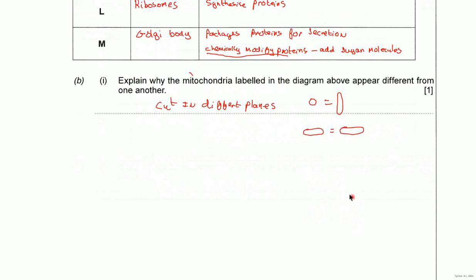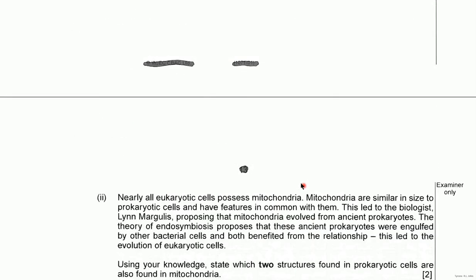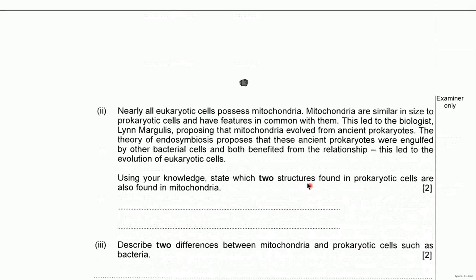Right, next part. Using your knowledge, state which two structures found in prokaryotic cells are also found in mitochondria. Well, that's going to be DNA and ribosomes. Remember that mitochondria are thought to have evolved from prokaryotes. It's the endosymbiont theory again.